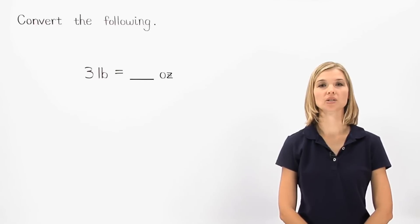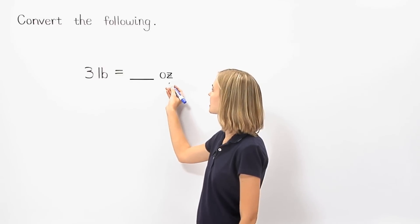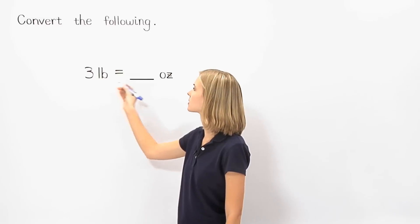In this example, it's important to understand that LB stands for pounds and OZ stands for ounces. So we're asked to convert three pounds into ounces,